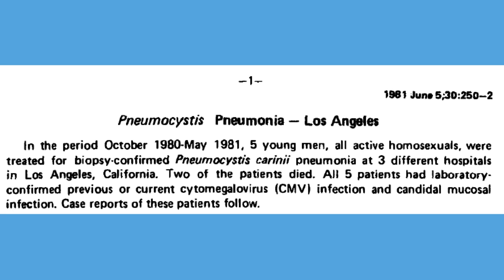The very first people identified with this new condition were first called GRID — the Gay Related Immune Deficiency — and then it was quickly changed to the Acquired Immune Deficiency Syndrome when the first women were diagnosed with it. Those early people were back in June of 1981; they'd had illnesses for a few years leading up to then, and that was the culmination of it.